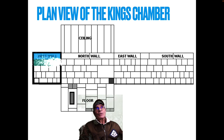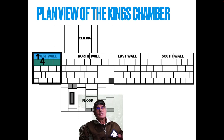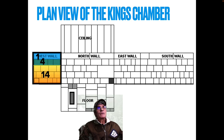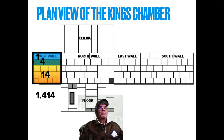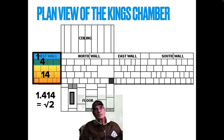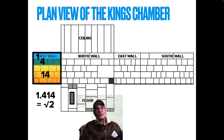On the west wall you've got that single block on the top course, then 4, then 14. That's 1.414 — the square root of 2. So you've got pi, phi, E, and square root of 2 — these major constants.